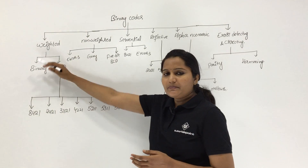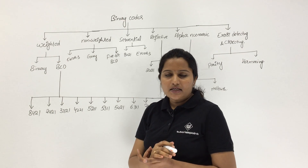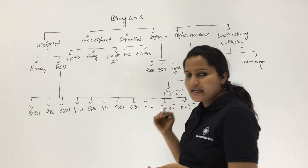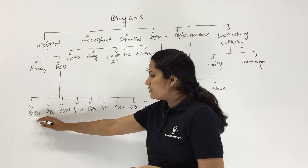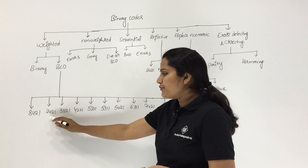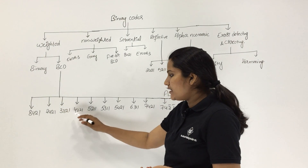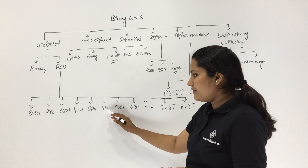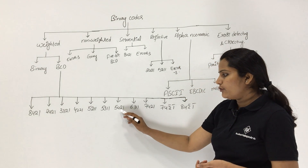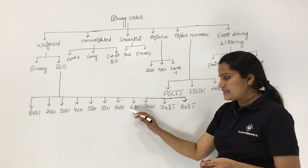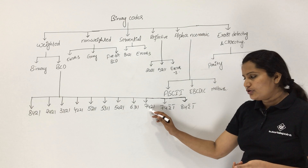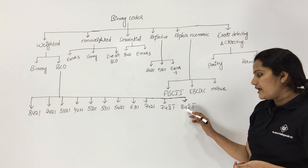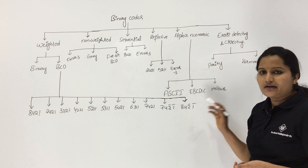BCD code is again divided into several types: 8421, 2421, 2321, 421, 521, 531, 541, 631, 741, and also 742̄1̄ and 842̄1̄ codes with bar notation indicating subtracted weights.